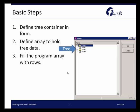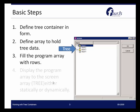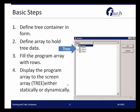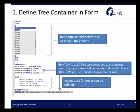Then you're going to fill the program array with rows just as you would with any other array — load your array with data — and then display the array to the tree container that's going to house that. So the first step again is to define the tree container in the form. Here we can see that simple form that has a tree container defined.